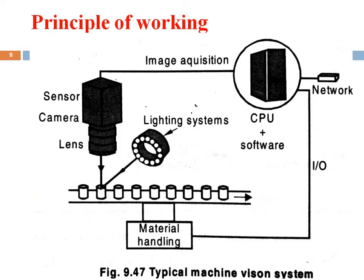This image illustrates the working principle. There is a material handling system where products move in one direction on a conveyor belt. A camera with a lens is placed on top of the conveyor belt, and a lighting system is provided on the side. The data captured by the camera goes to the image system through the computer. The computer processes the images and produces output, which is also connected to the material handling system — if any product is rejected or damaged, it acts as a closed-loop feedback system.